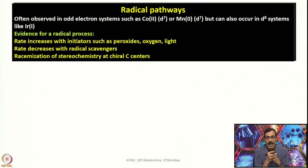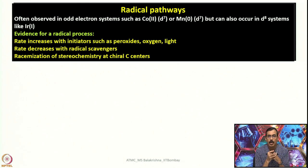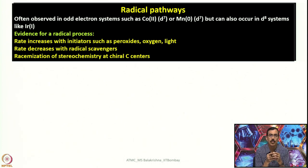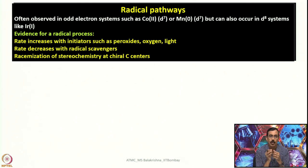Now the third mechanism: radical pathways. Radical pathways are exclusively followed by metals with odd-electron systems, such as cobalt(II) d⁷ or manganese(0) d⁷. However, it does not mean that even-electron systems like d⁸ cannot follow radical pathways — they sometimes can. We must assess whether a radical pathway, concerted mechanism, or nucleophilic oxidative addition is followed. Distinguishing concerted from nucleophilic addition is straightforward: polar molecules follow nucleophilic oxidative addition; non-polar molecules follow the concerted method. Between radical and nucleophilic addition, certain tests must be applied.